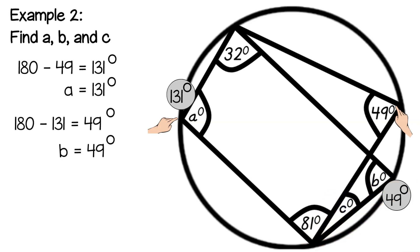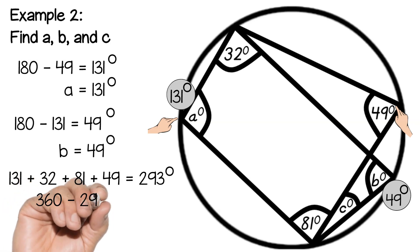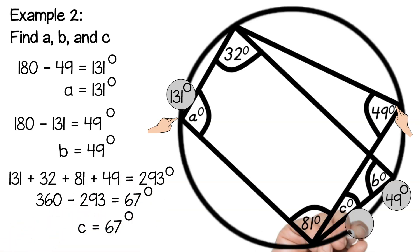Now I'm going to look at 32 degrees, 81 degrees, b and c, so that four-sided shape. If I add up all of the angles that I have there, so 131 add 32 add 81 add 49 that gives me 293. Now remember the angles in a four-sided shape add to 360 degrees so I'm going to take that away from 360 and that gives me 67 which is c.